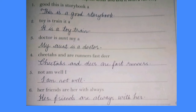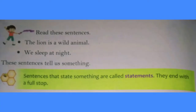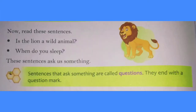Next we are going to learn different types of sentences. For example: 'The lion is a wild animal.' 'We sleep at night.' These sentences tell us something. The sentences that state something are called statements. They end with a full stop. So the first kind is statement — it ends with a full stop and tells us about something.